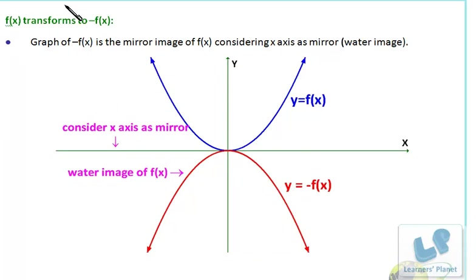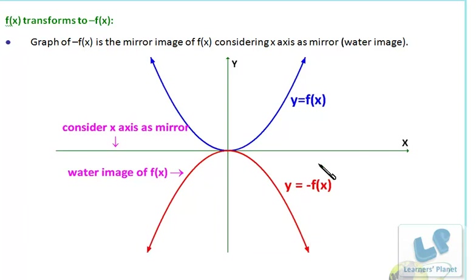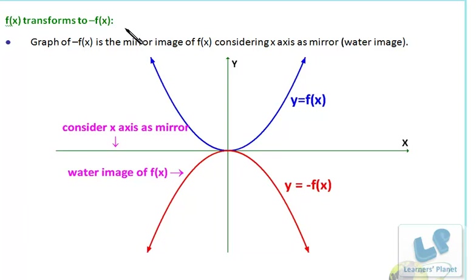Now suppose f(x) is converted to -f(x). In that case you have to consider the x-axis as a mirror and turn the graph like this. This is like a U shape and this is like an inverted U. This is f(x), this is -f(x) — or you can consider this as the water image. If you see a U in water you will see an inverted U, so this is the transformation of f(x) to -f(x).